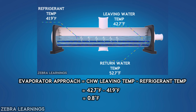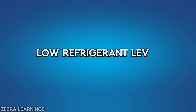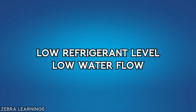An evaporator approach value below 3 degrees Fahrenheit indicates that heat transfer from the water to the refrigerant is happening well. If the approach value is higher than 3 degrees Fahrenheit, it means that heat transfer is not happening properly. This could indicate a problem with the coil such as scale formation. Additionally, a low refrigerant level or low water flow can also cause a high approach value.